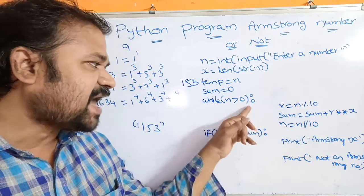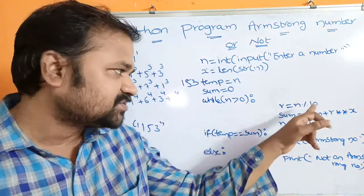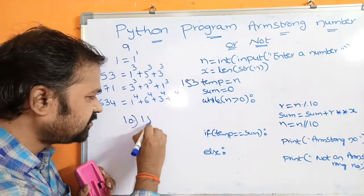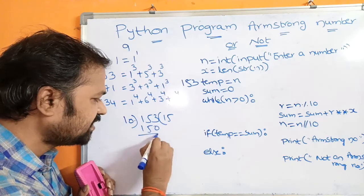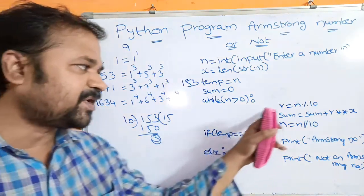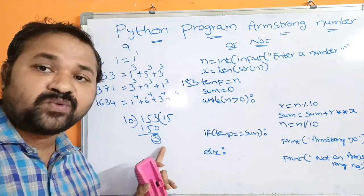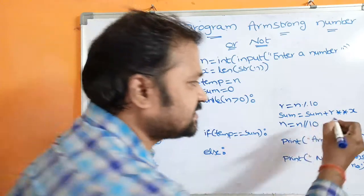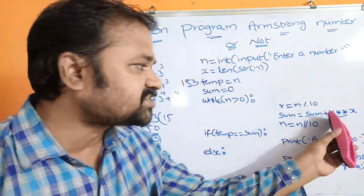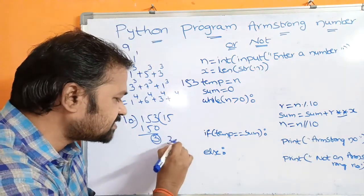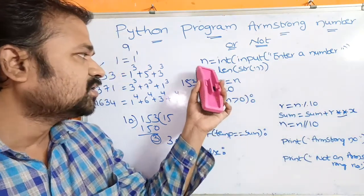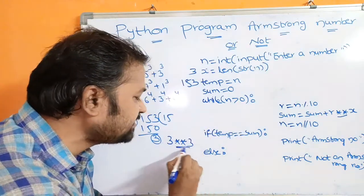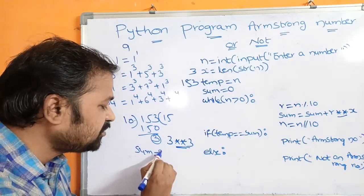The logic repeats while n is greater than 0. First, r = n % 10. For n=153, 153 mod 10 gives remainder 3, so r is 3. Then sum = sum + r**x. The ** operator is the exponentiation operator, so r**x means 3**3, which is 27. So sum becomes 0 + 27 = 27. Then n = n // 10, so 153 // 10 gives 15; now n is 15.